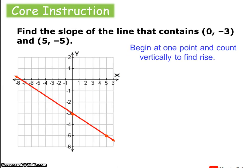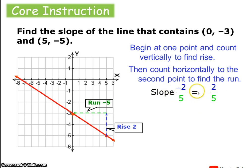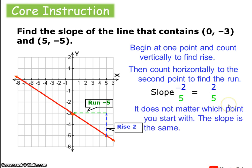Here's another example. Starting at the point (5, −5), I rise two and then run negative five. So this has a slope of two over negative five, or negative two-fifths. I can write this as negative two over five or bring the negative sign out front: the slope is negative two-fifths. It doesn't matter which point you start with — I could have gone from left to right, going down two and over five, and still gotten negative two-fifths.